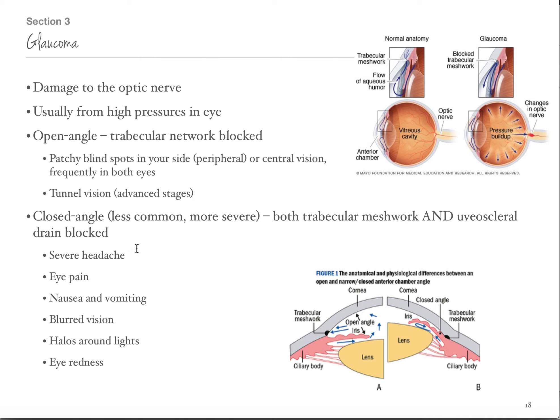Closed angle glaucoma is much less common, which is good because it's way more severe. The trabecular meshwork is blocked, and so is the uveoscleral drain, so nothing can drain at all. The eye builds up pressure. Your patient will get a severe headache, eye pain, start vomiting, have blurred vision, see a halo around lights, and the eye will look red and swollen. This is an emergency — they use medication to open it up and drain, and it usually leads to eye surgery.